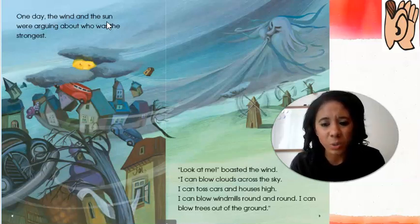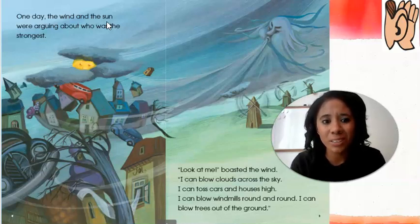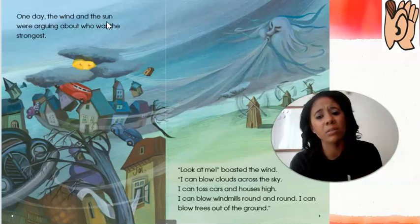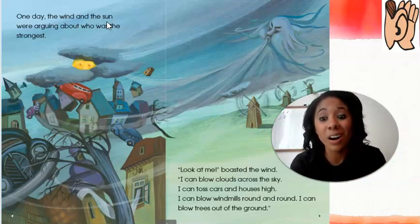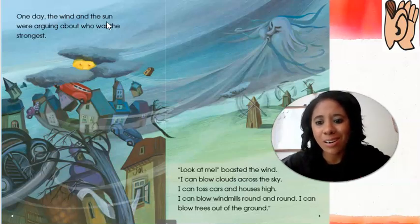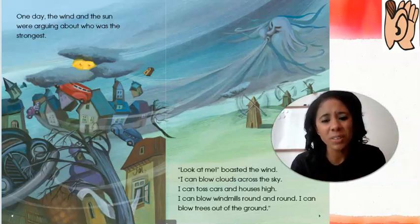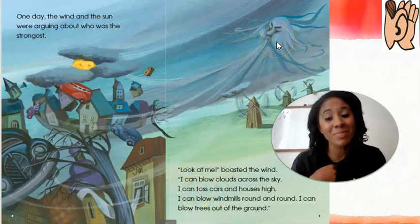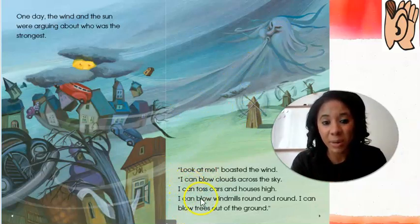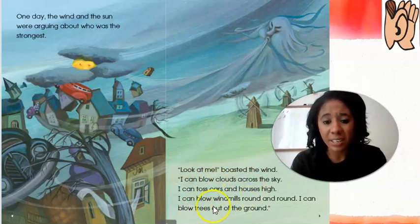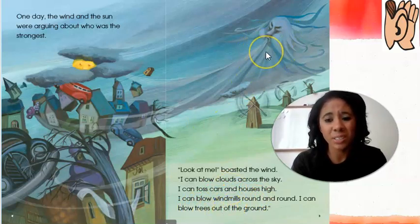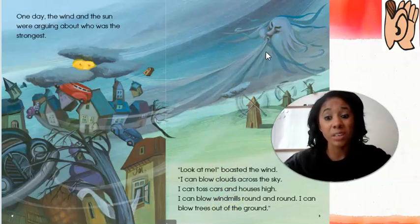The wind and the sun were arguing about seeing who was the strongest. Throughout this part of the story, they were going back and forth. The wind was like, 'Sun, I'm the strongest.' They were talking about how they can blow clouds across the sky and toss cars and houses really high. They can blow windmills round and round and trees off the ground.